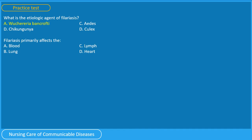Question 2: Filariasis primarily affects the A. blood, B. lung, C. lymph, or D. heart? You have 5 seconds. If you answered C, you are correct.